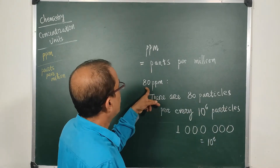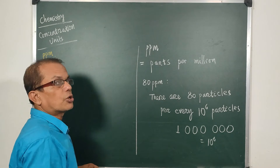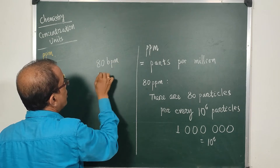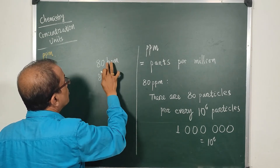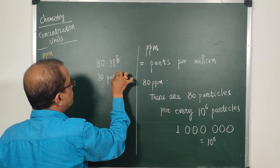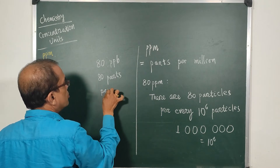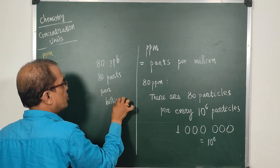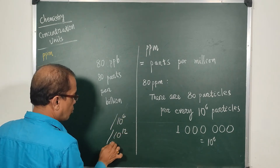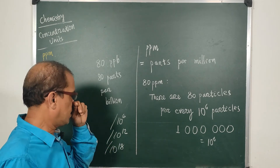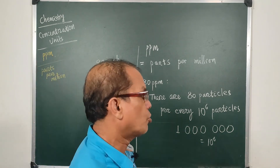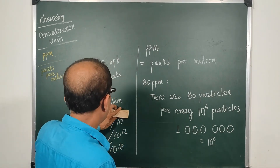In some western countries it is also called PPB, which means 80 parts per billion. So if you are counting out of 10 to the power 6, 10 to the power 12, or 10 to the power 18, we can call it parts per million, parts per billion, or parts per trillion. These are concentration units used in different scales.